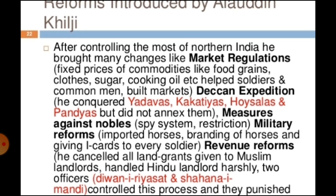Alauddin also led the Deccan Expedition, conquering the Hoysalas and Pandyas but not annexing them. He introduced Measures Against the Nobles and Military Reforms — standardizing horses and equipment used in warfare. He also introduced Revenue Reforms, cancelling all land grants given to Muslim landlords and reassigning land to officers.